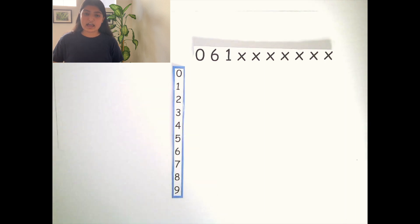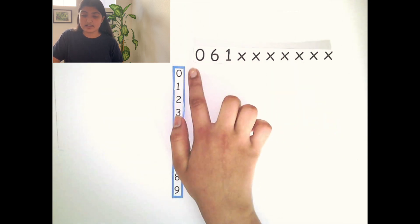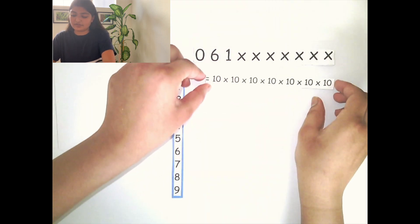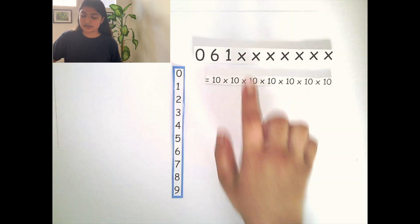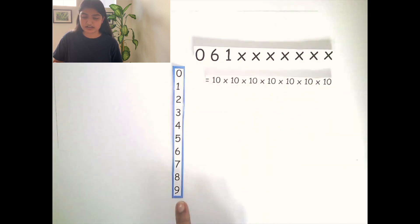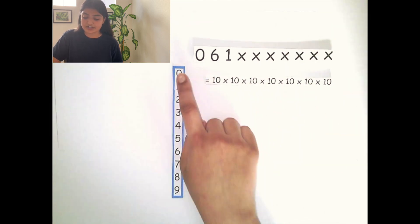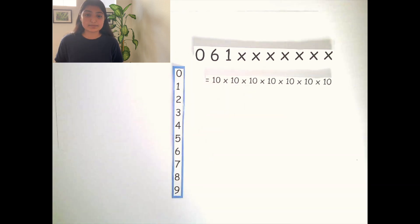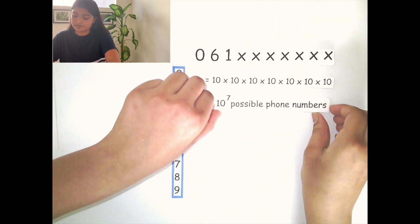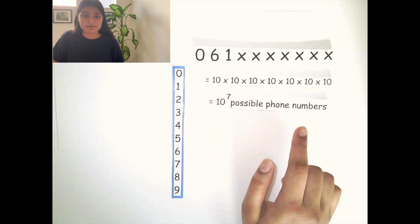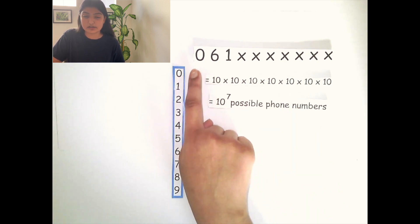Therefore, to find the total possible phone numbers for a number beginning with 061, we multiply 10 by itself 7 times — since there are 7 different places and each has 10 possible values. This simplifies to 10 raised to the power of 7 possible phone numbers for a number starting with 061.